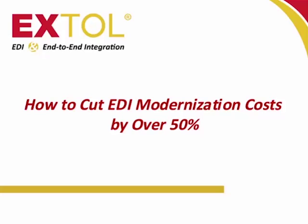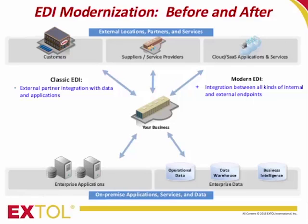Let's start with a quick refresher on the main differences between classic EDI systems and the modern solutions that replace them, beginning with differences in the scope of integration capabilities. Classic EDI gives you the ability to integrate customers, vendors, and other external partners with your enterprise applications and data — we're all familiar with that model. Modern systems, on the other hand, are not limited to partner integration; they can also integrate internal and external applications with each other, integrate data, and integrate services in any combination.